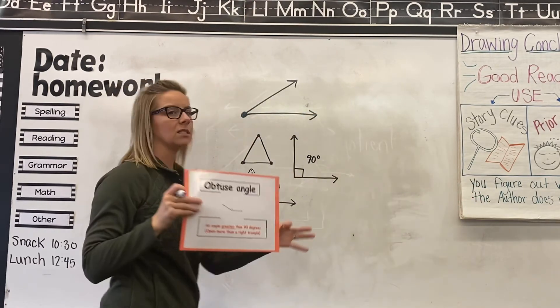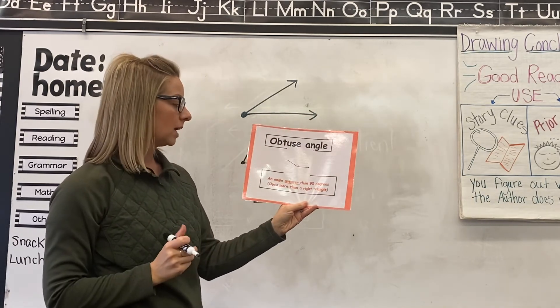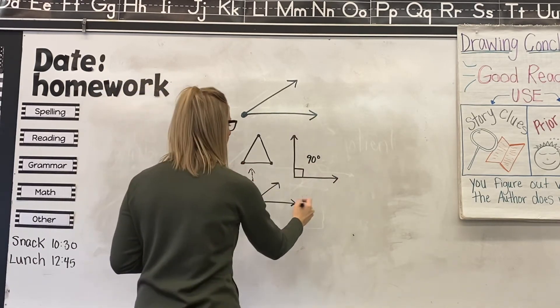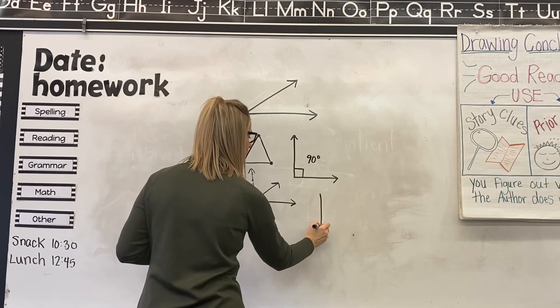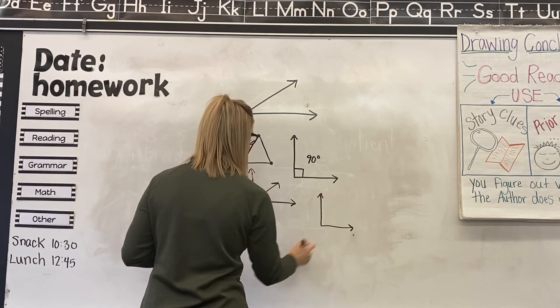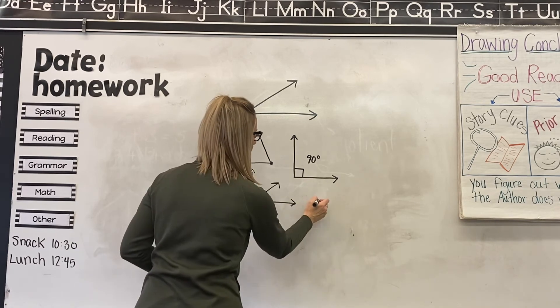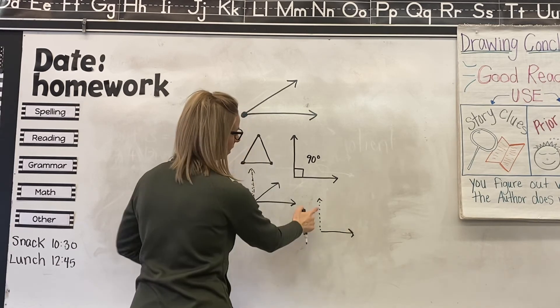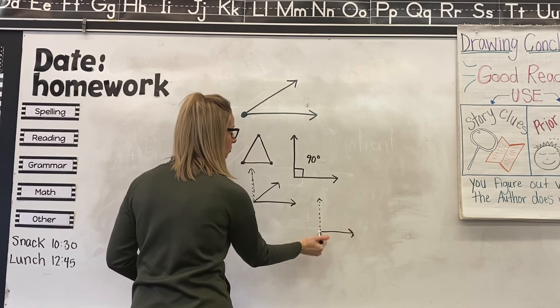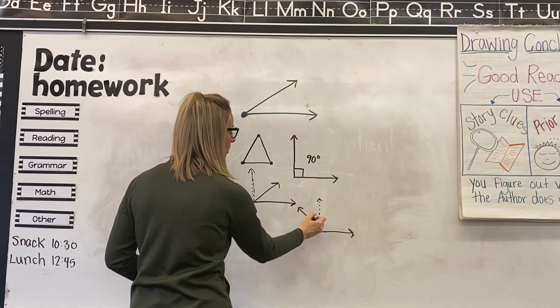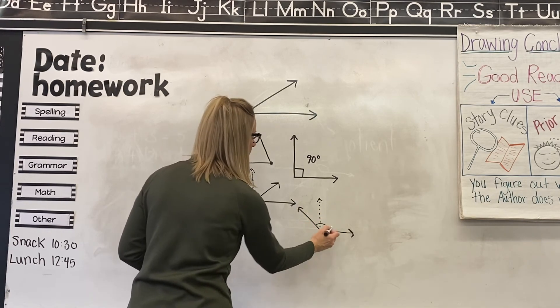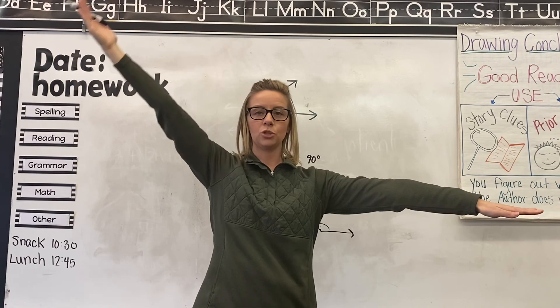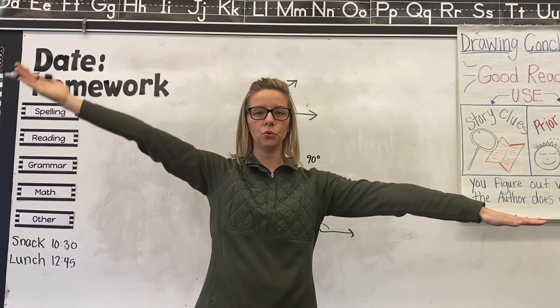And the last one is obtuse. An obtuse angle is an angle greater than 90 degrees or more open than a 90 degree angle. So here is a 90 degree angle. Make my imaginary 90 degree angle. So then the angle would be open more this way. You would draw it coming out this way. So it's more than 90 degrees. We call that an obtuse angle. So here's your 90. Obtuse would be open wider. And we say obtuse angle.